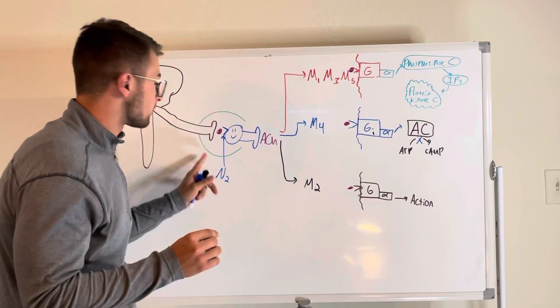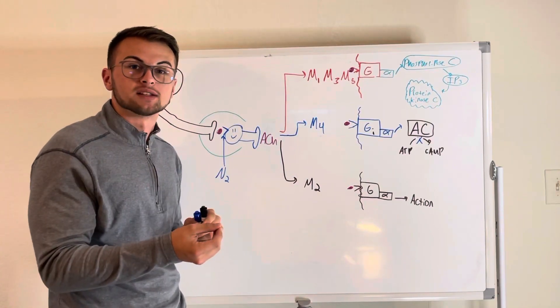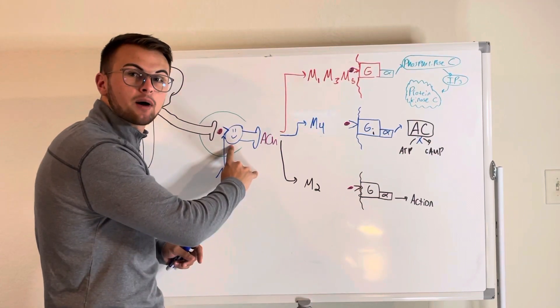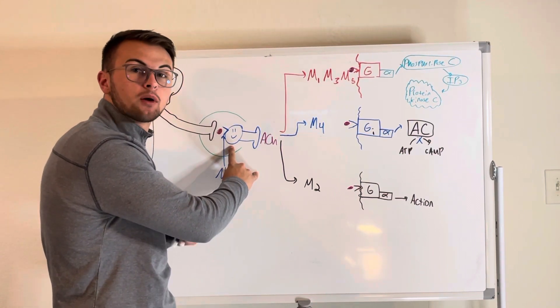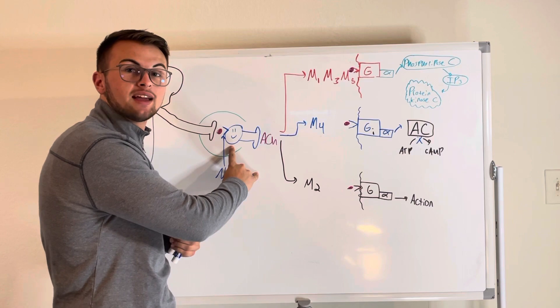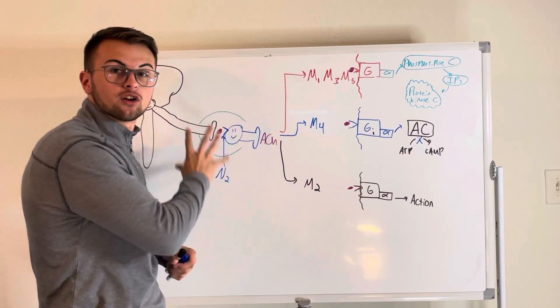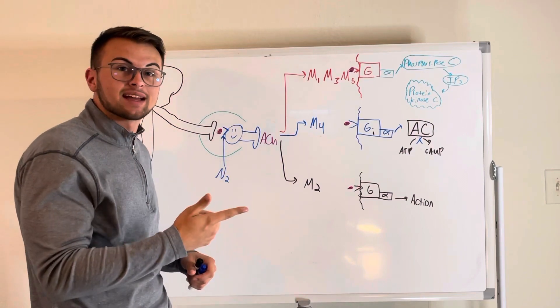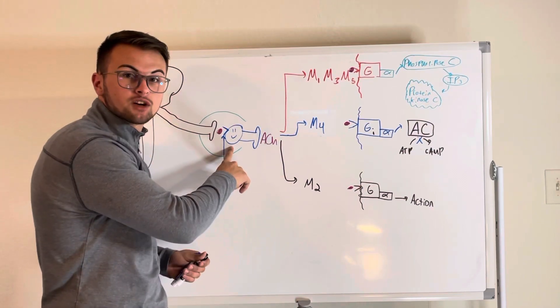Now N2 receptors, on the other hand, they're also activated by acetylcholine but they're located on the cell bodies of all of the post-ganglionic neurons which are located in various ganglia in the autonomic nervous system. So remember, N2 receptors found in both parasympathetic and sympathetic post-ganglionic neuron cell bodies.